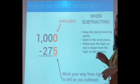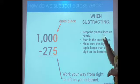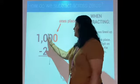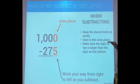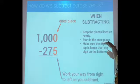So how do we subtract across zeros? When subtracting, you want to keep the places lined up neatly. The second step is to start in the ones place. We always start here.